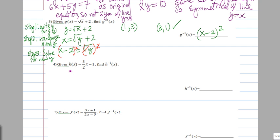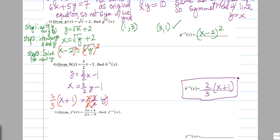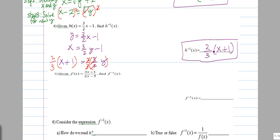For number 4, we call the function y, interchange x and y, and solve for the new y. We add 1, then multiply both sides by two-thirds, and there is our answer. The inverse of h is two-thirds x plus 1. You could write it that way, or distribute the two-thirds — it doesn't matter.